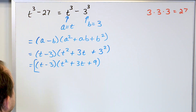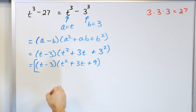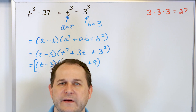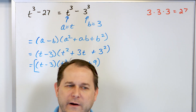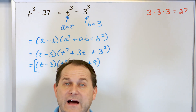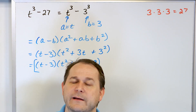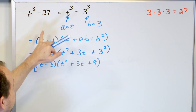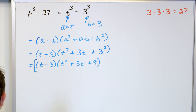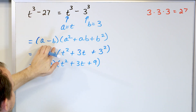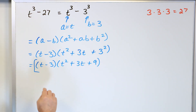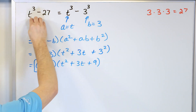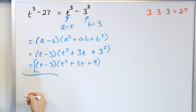We knew that was the final factored form because the problem fits a special case. Just like 16 is a perfect square and 25 is a perfect square, 27 is a perfect cube. When we have a difference of cubes, a very special factored form is always true — we just figure out what A and B are and plug them in. We could multiply the answer back out to verify, and we'd get back T cubed minus 27.